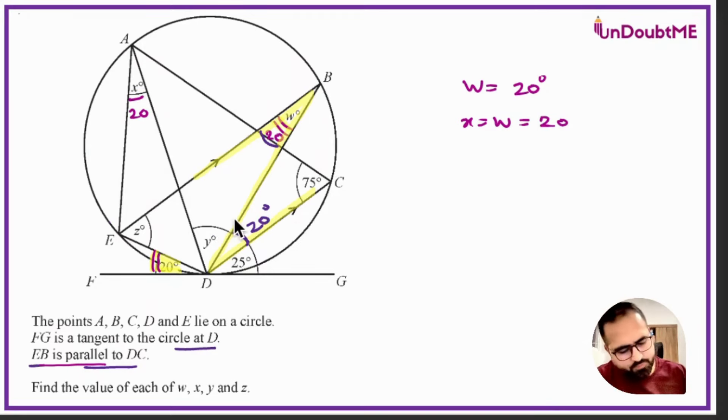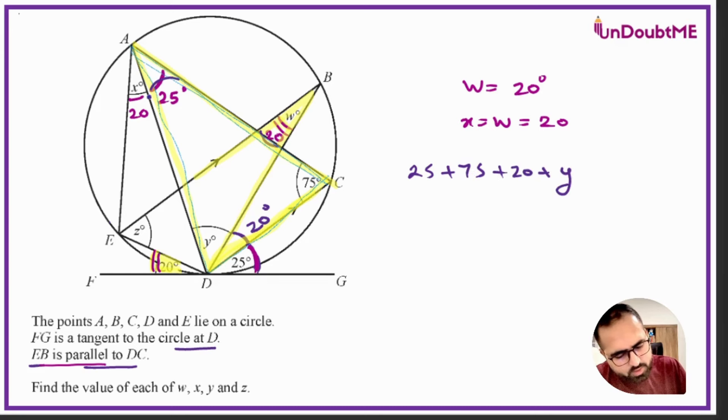To get y value, we can work once again for alternate segment. So this is 25, we have an angle which is in the alternate segment to 25, and that is this angle, so that will also be 25. Now just have a look at this triangle. In this triangle which I'm marking, we have the angles 25, 75, 20, and y. 25 plus 75 plus 20 plus y equals 180. If you solve this, 25 plus 75 is 100, 120 goes on the other side, so 180 minus 120 gives y is equal to 60.